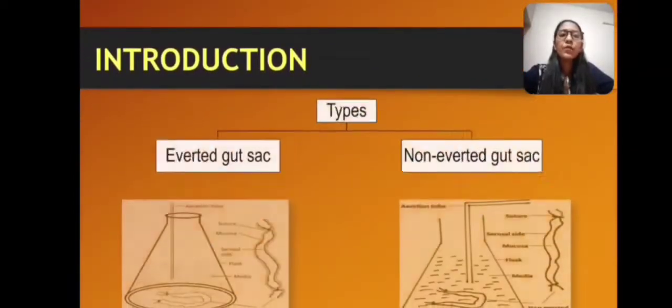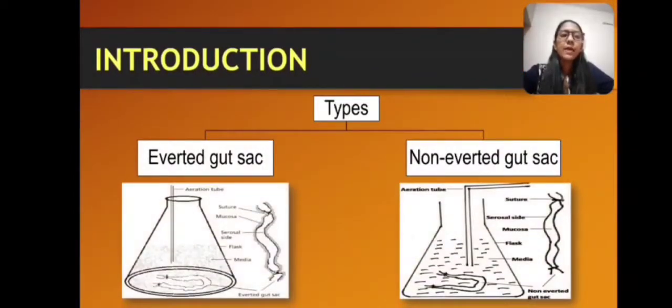This study is of two types: everted gut sac method and non-everted gut sac method. In everted gut sac method, the intestinal sac is everted with the help of a glass rod, then the drug solution is filled into it, and we can investigate the transfer of drug from serosal side to mucosal side. Whereas in non-everted gut sac method, we use the intestinal sac as such and investigate the transfer of drug from mucosal side to the serosal side.